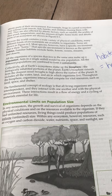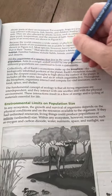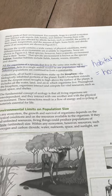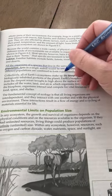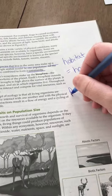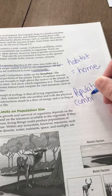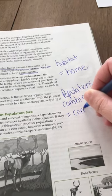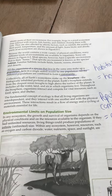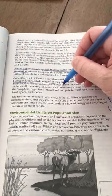All the organisms of a species that live in the same area make up a population. Ants in a single anthill would be one population. All the different populations are combined to form a community — populations combined equals community. Collectively, all the Earth's ecosystems make up the biosphere, the biologically inhabited portions of the planet.